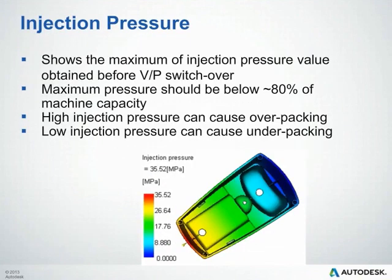You'll also receive an Injection Pressure plot showing the maximum injection pressure seen prior to the VP switchover. Keep in mind the maximum pressure should be below roughly 80% of the machine capacity to ensure you can produce this part. Areas with higher injection pressures may have issues with overpacking, and areas with low injection pressures could have underpacking.